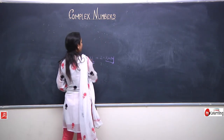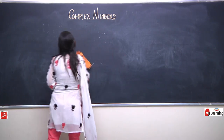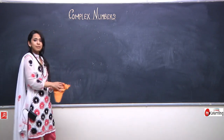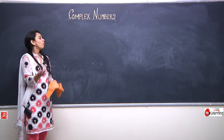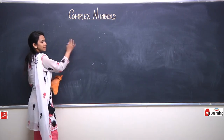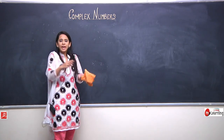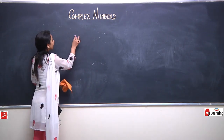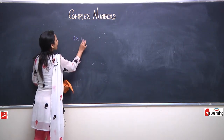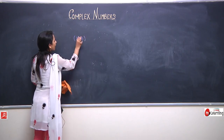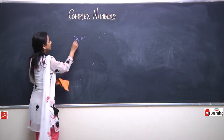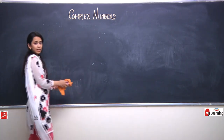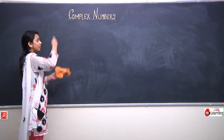Let us discuss the Argand diagram in more detail. A complex number can be represented in two ways. One is the Cartesian way, where the complex number is written as z equals x plus iota y. The other representation is polar coordinates, where a complex number is represented as the ordered pair r comma theta. I would like to mention that r must always be positive, because r is the displacement of the complex number from the origin.